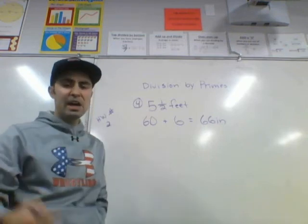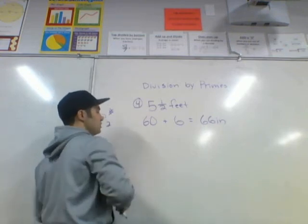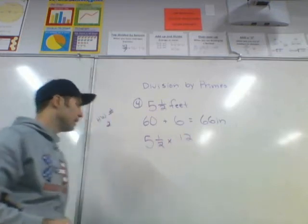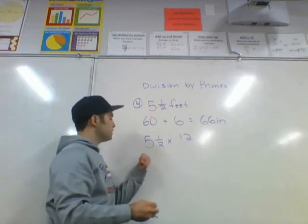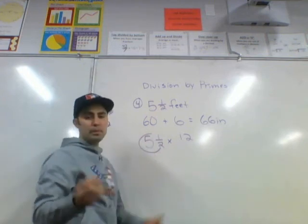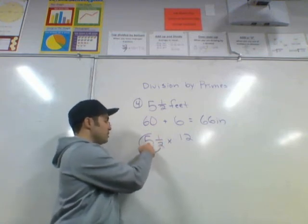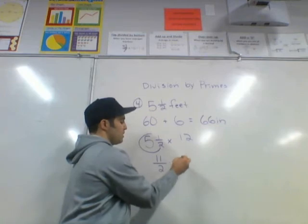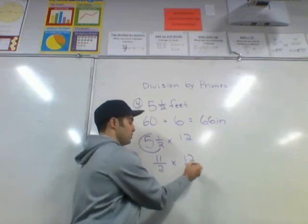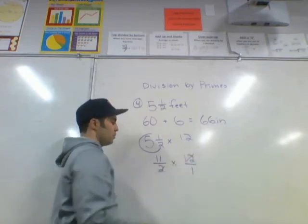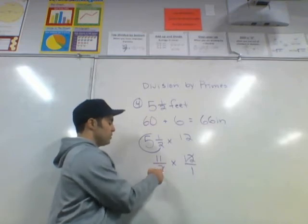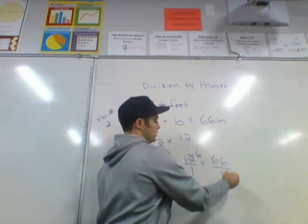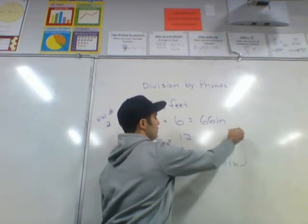For those who want to show their work more methodically: take 5 and a half feet and multiply by 12. Convert the mixed number using the backward C method — 2 times 5 is 10, plus 1 is 11, over 2 — then multiply by 12 over 1. Cross-cancel: 2 divided by 2 is 1, 12 divided by 2 is 6. Then 11 times 6 is 66, times 1 is 1, giving 66 inches. Same answer!